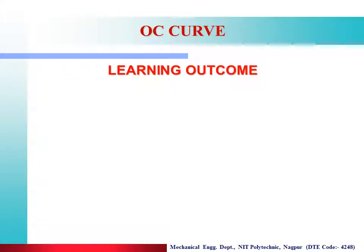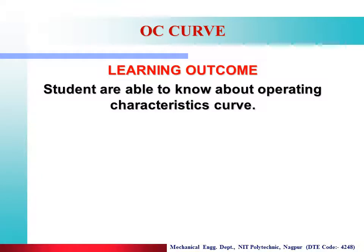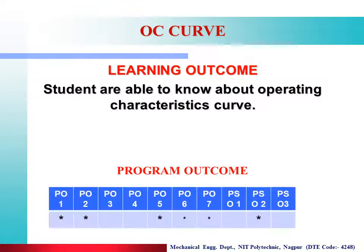The learning outcomes of today's lecture: students will be able to know about the Operating Characteristics Curve. The various Programme Outcomes achieved in today's lecture are PO1, PO2, PO5, PO6, PO7, and the Programme Specific Outcome is PSO.